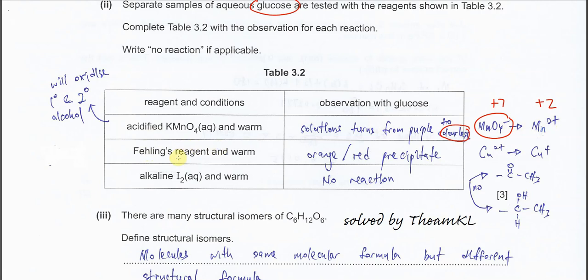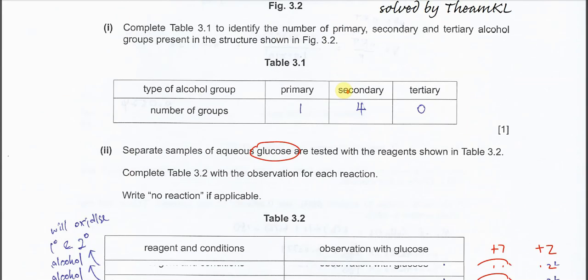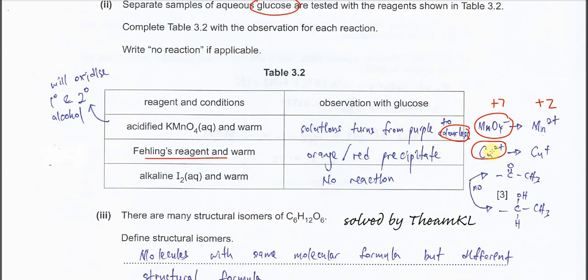Second reagent is Fehling's reagent and warm. Fehling's reagent contains copper 2+, which is blue. Because glucose has an aldehyde group, the aldehyde will react with Fehling's reagent. Fehling's reagent oxidizes the aldehyde and itself gets reduced. The copper 2+ reduces to copper 1+, which is orange or red precipitate. So you will see orange or red precipitate form.